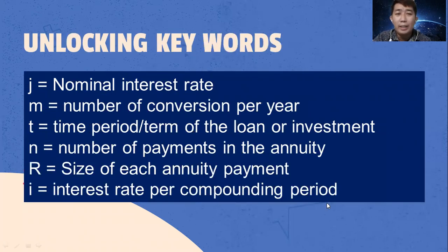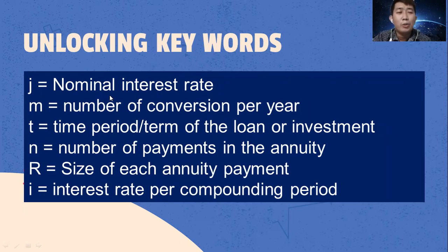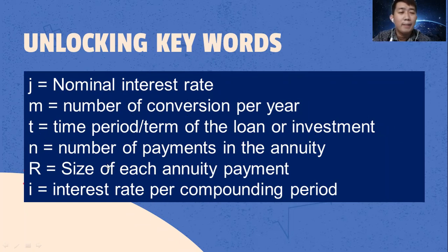These are the keywords you always see in our previous videos. J is equal to nominal interest rate. M is the number of conversions per year. T is the time period of the loan or investment. N is the number of payments in the annuity. R is the size of each annuity payment. And I is equal to interest rate per compounding period.